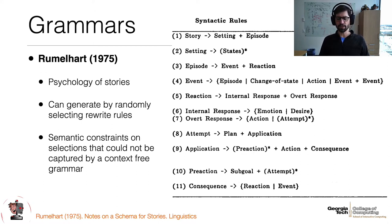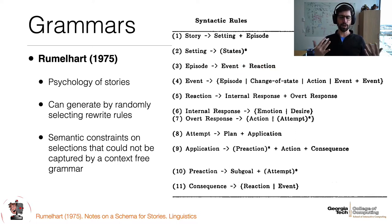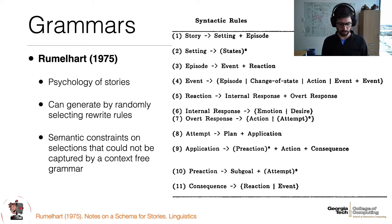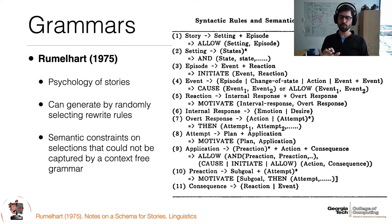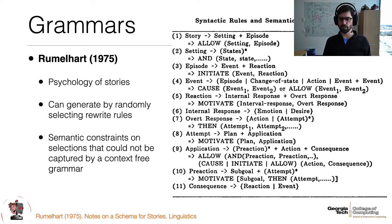By building a grammar like this, you can start to generate stories — identifying states as the setting, and putting events and reactions together as episodes. But context-free grammars don't enforce any relationships. You can have internal responses unrelated to the overt response, or events that don't seem to go together. Rumelhart recognized this and went further, noting that there are semantics relating things to each other: an event must initiate a reaction, one event causes or allows another, internal responses motivate overt responses. There are all these semantic relations between parts of the story.